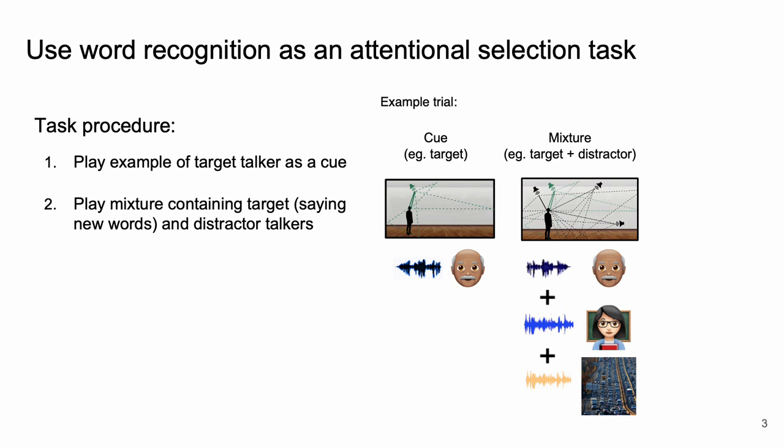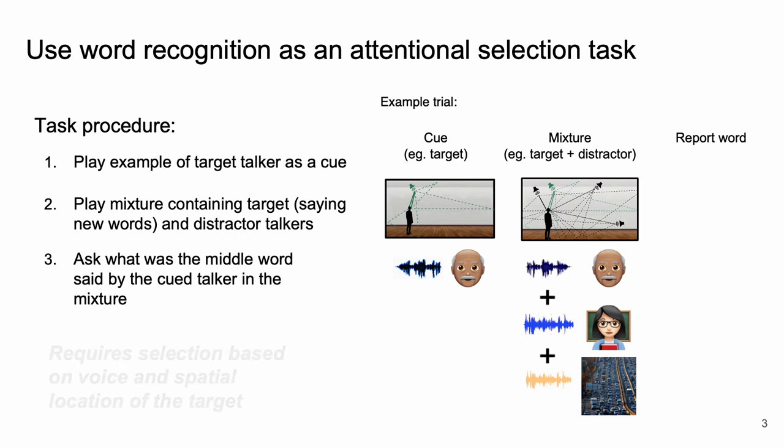We then play a mixture that contains the same target now saying new words along with distractor talkers and natural noises each at different locations. The task objective is going to be to report the middle word said by the cued talker in the mixture. Correctly performing this task requires attentional selection based on the voice and spatial location of the target.